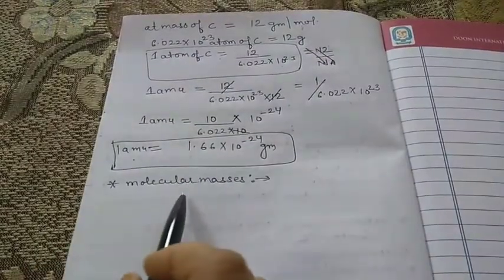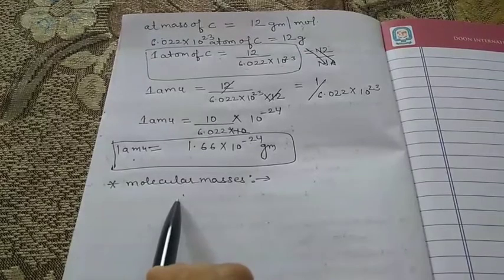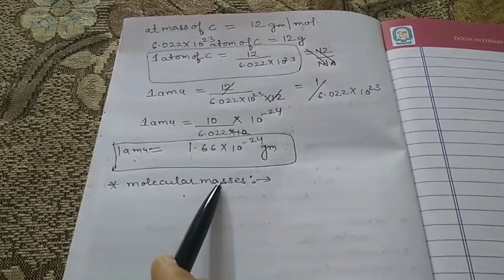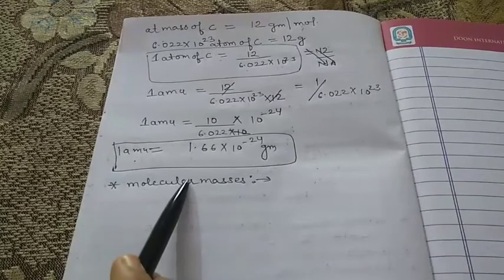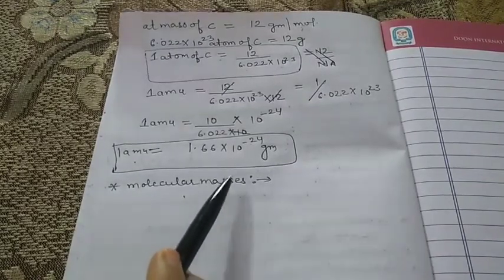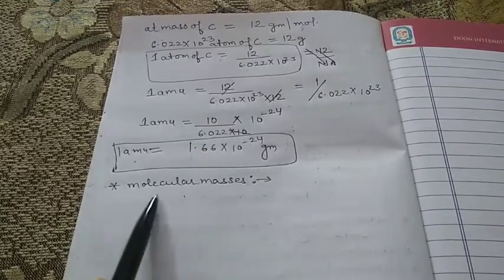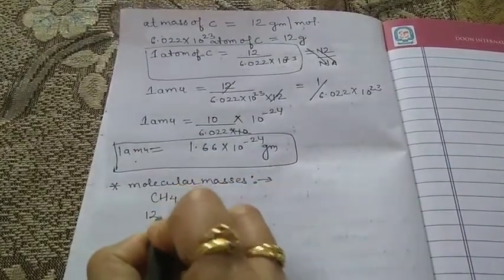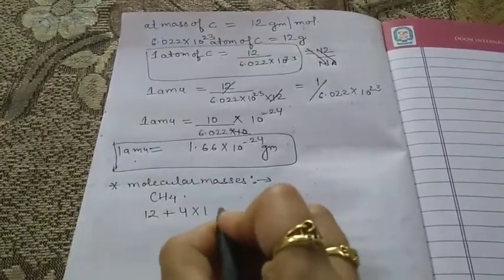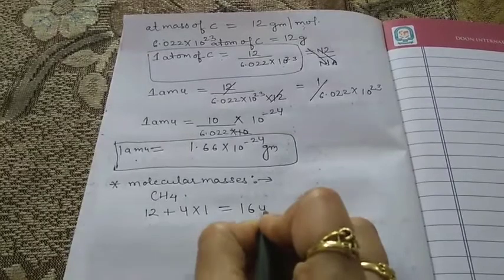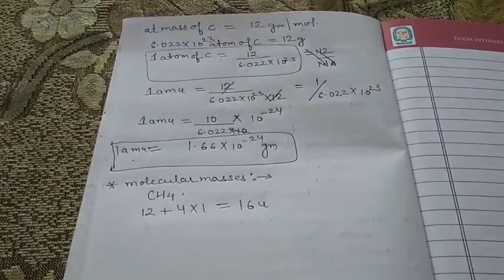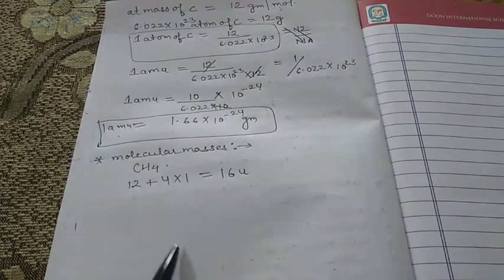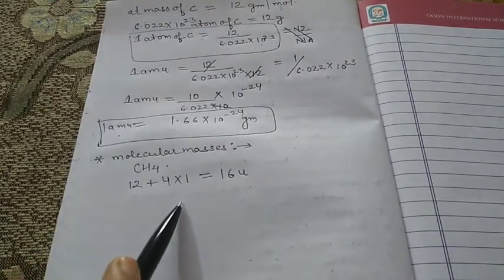The next heading is molecular masses. The molecular mass is the sum of the atomic masses of the elements present in a molecule. It is obtained by multiplying the atomic mass of each element by the number of its atoms and then adding them together. For example, CH4 has molecular mass = 12 + (4 × 1) = 16 U. By this method we can find the molecular masses of any compound.